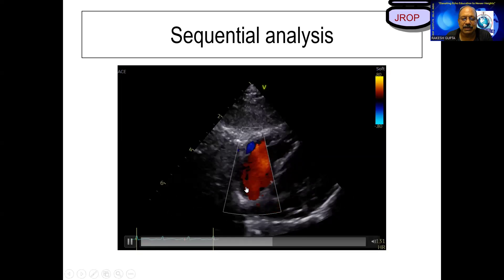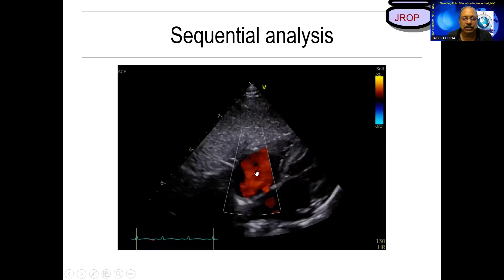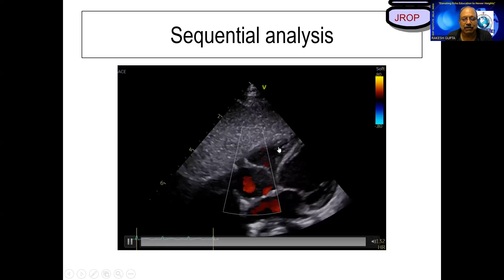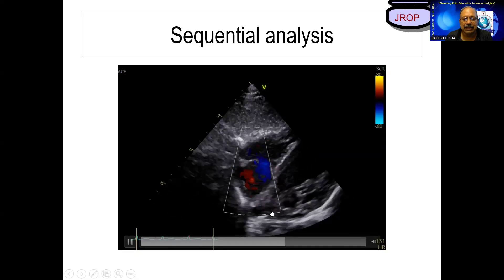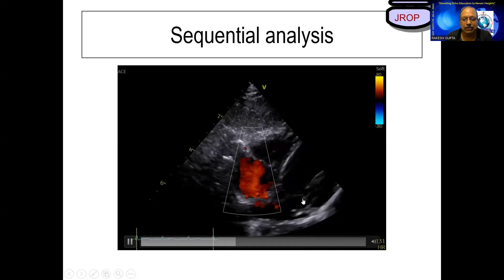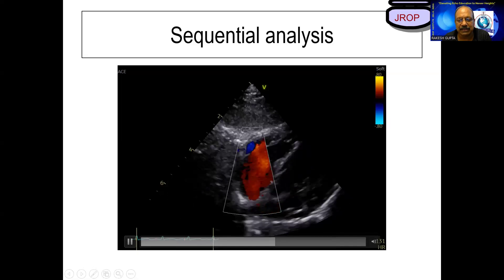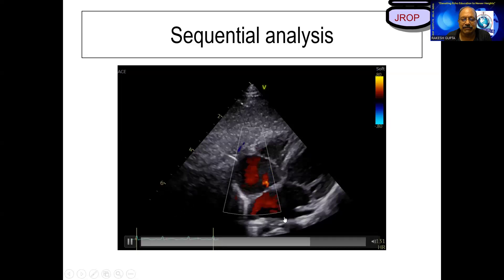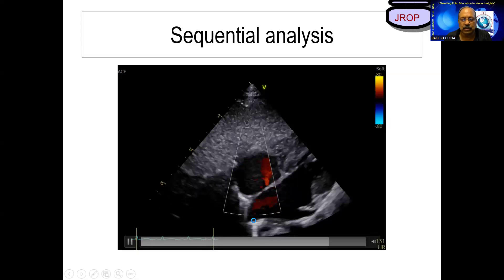The non-pulsating structure is the IVC, which opens into the chamber known as the morphological RA. The structure that is not pulsating opens into the morphological RA. This morphological RA is connected to the morphological RV through the tricuspid valve. Similarly, the morphological LA is connected to the LV through the mitral valve. RA has only IVC and SVC drainage, whereas the left atrium has pulmonary vein drainage — two on the left and two on the right.